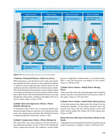Cylinder power stroke, final: as the piston passes the exhaust port, the exhaust exits the combustion chamber. As the piston continues down, the transfer port opens and the swirling motion of the fuel/oil/air mixture pushes the exhaust out of the exhaust port. As the piston reverses direction from the down stroke to the up stroke, the process is complete.